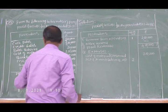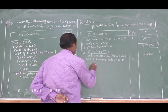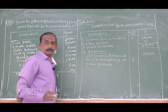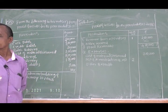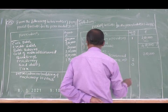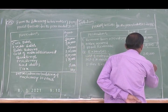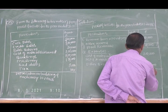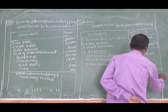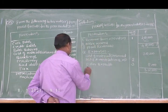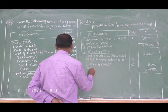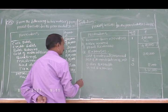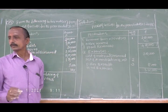Next, other expenses. Five thousand. Total expenses: three lakh five thousand.